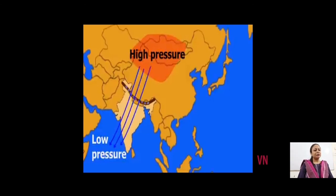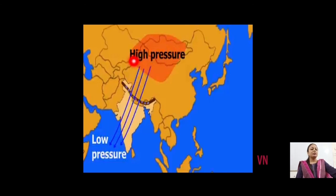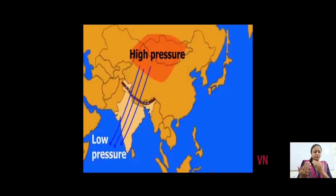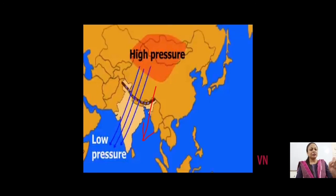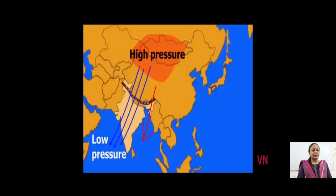During winter the condition reverses — the land has high pressure and the sea has low pressure, so the wind blows from land to sea. While moving from land to sea, the wind crosses over the Bay of Bengal for some time, absorbs some moisture, and causes rainfall in the coastal areas of Tamil Nadu and Andhra Pradesh. This is how monsoon has a big role in modifying the climate of India.